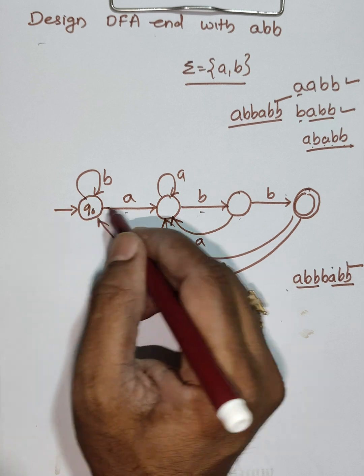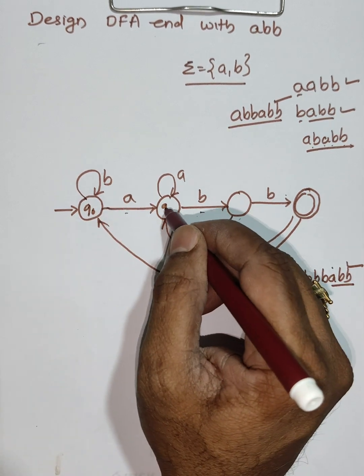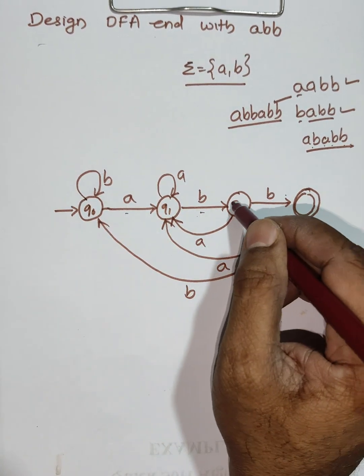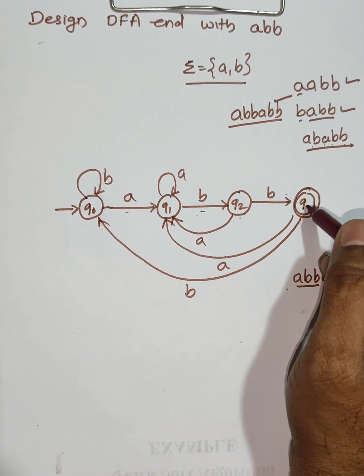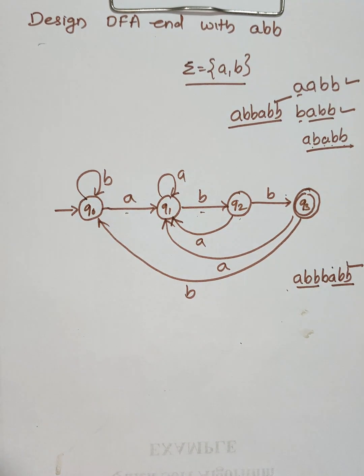Numbering the states: this is Q0, Q1, Q2, Q3. This DFA can accept strings ending with A, B, B.